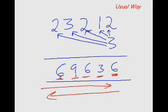Any method that helps us find the answer from left to right — the most significant digit first — would immediately skyrocket our speed. You can straight away start seeing the answer as 69,636. That is precisely what we will learn right now in the faster way.